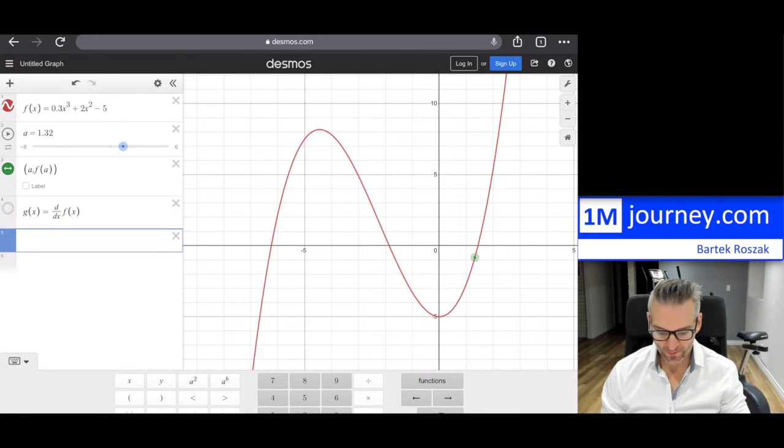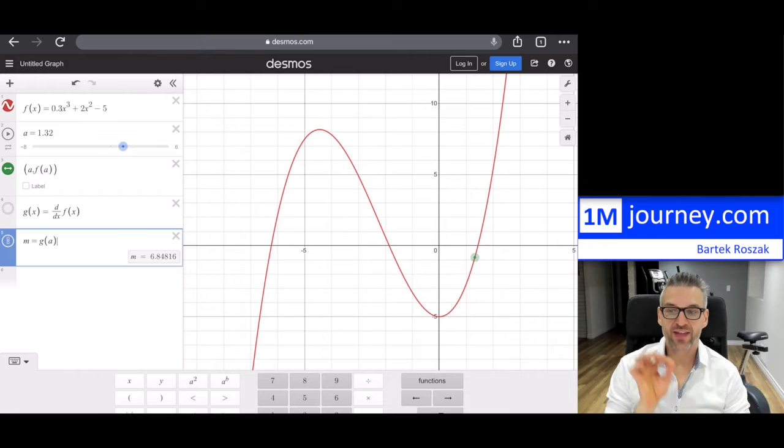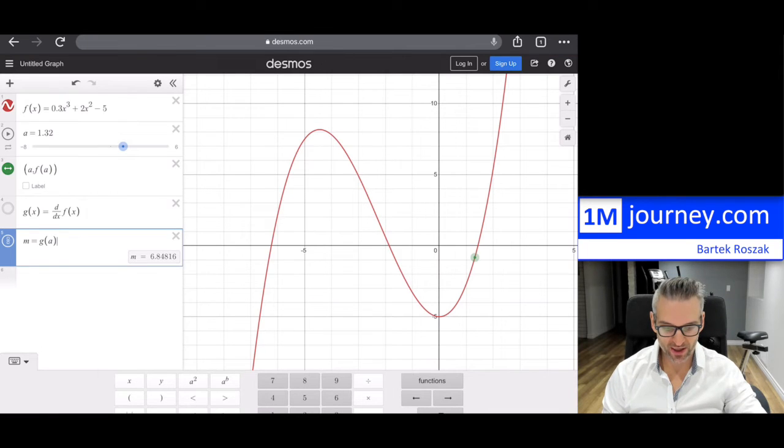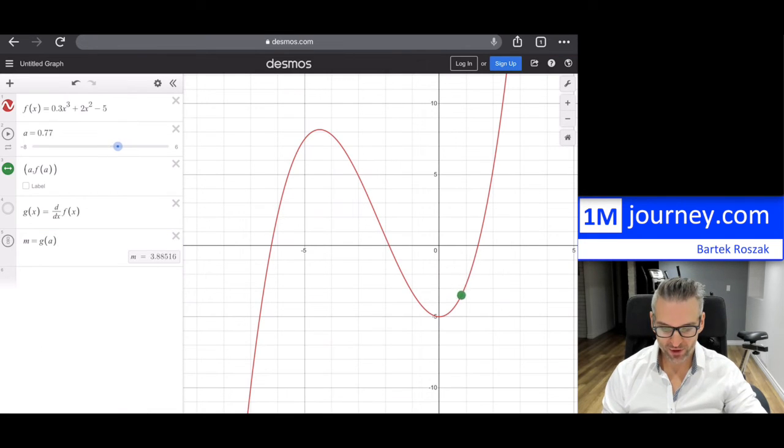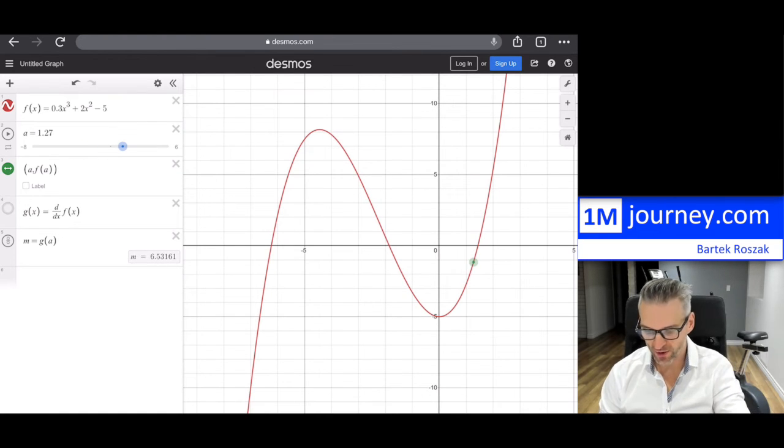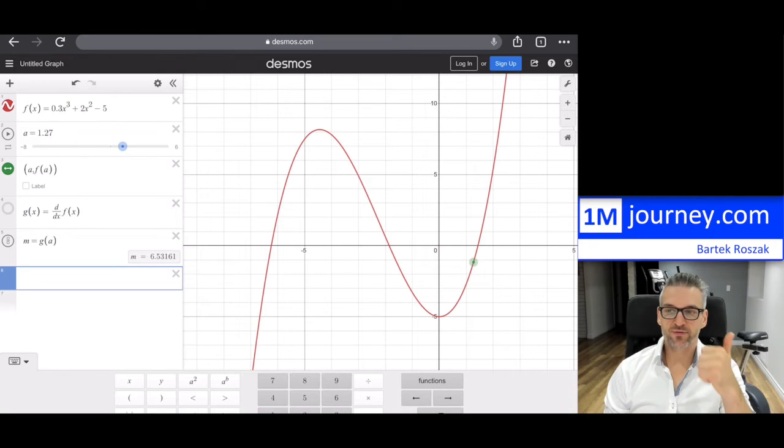And now my slope, so my m is equal to, this is going to be g at a, so I want it at that particular point, right? So at a equals to 1.32 in this case, but it could be anything. So now again, notice I'm going to move the point around and then the slope changes. So on the left-hand side you can see that the slope is changing, because I know now the slope at any point that I like. And so our goal is ultimately to animate this throughout.